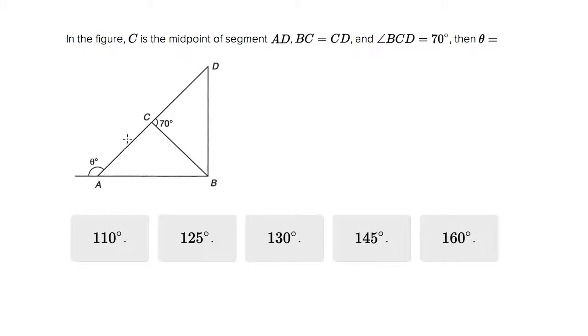C is the midpoint of AD, so we know that these two lines have the same measure. They also tell us BC equals CD, so this has the same angle measure also.